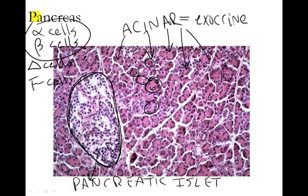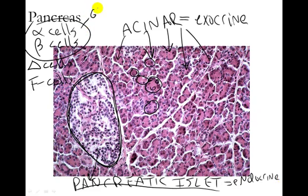I'm mainly concerned with alpha and beta cells because they secrete the most powerful hormones of the pancreas. This islet of Langerhans — the pancreatic islet — is the endocrine portion of the pancreas. Alpha cells secrete a hormone called glucagon, and beta cells secrete insulin. These are very important hormones for blood sugar regulation. You can read more about those in the notes.